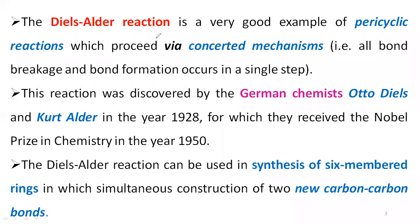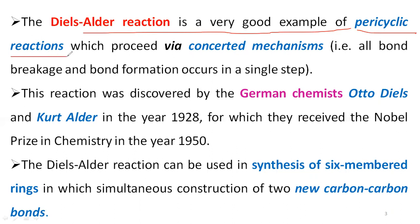The Diels-Alder reaction is considered a good example of a nucleophile-electrophile reaction. In this reaction, the diene — the conjugated diene — is electron-rich, and the dienophile component is electron-poor. Hence, the electron-rich conjugated diene reacts with the electron-poor dienophile to produce the respective cyclic addition product as the Diels-Alder product.